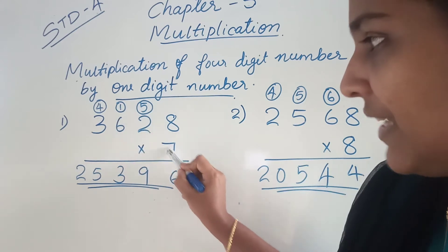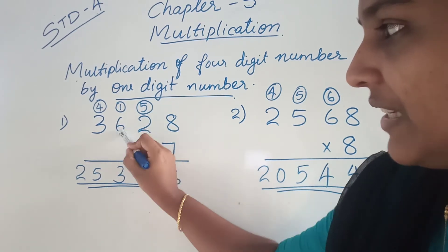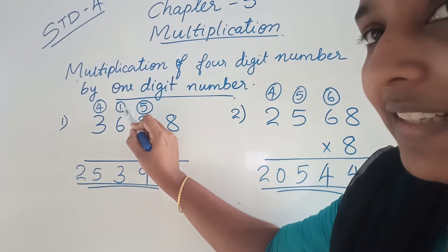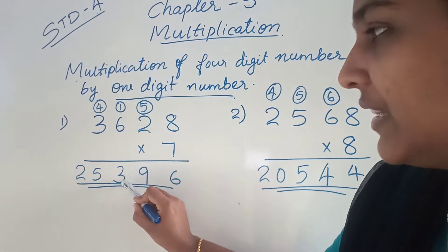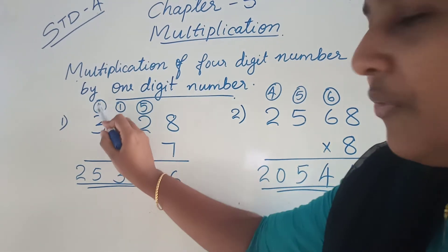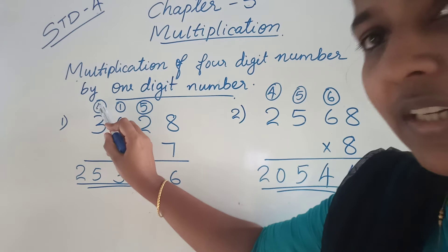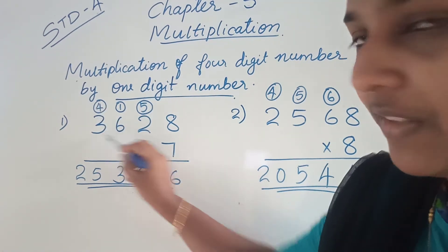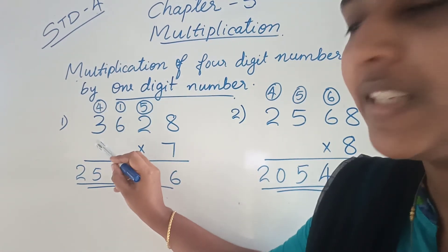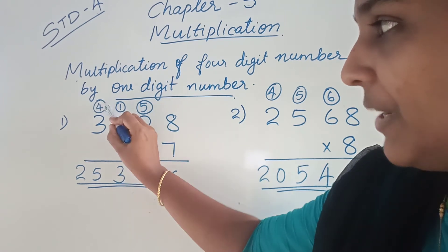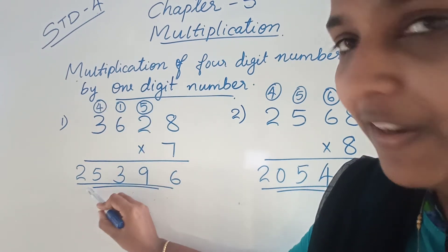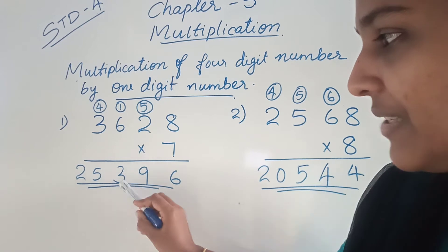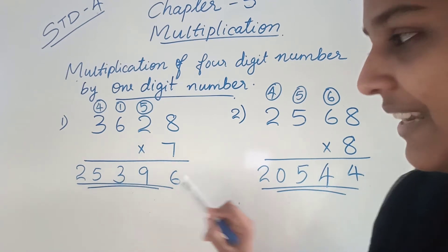Now multiply 7 with 6. 7 sixes are 42. 42 plus 1 is 43. You can write 3 here and 4 carry over to the next place. Now multiply 7 with 3. 7 threes are 21. 21 plus 4 is 25. So we got the answer 25,396.